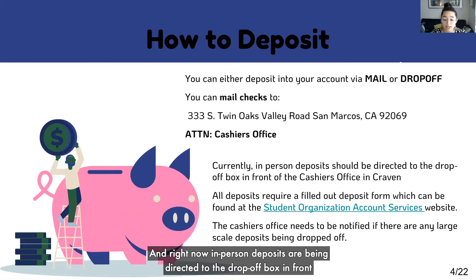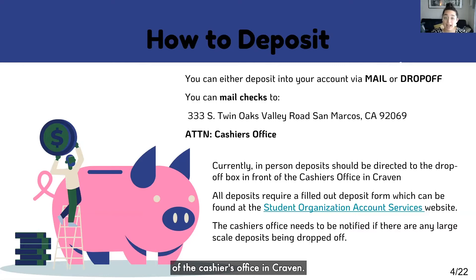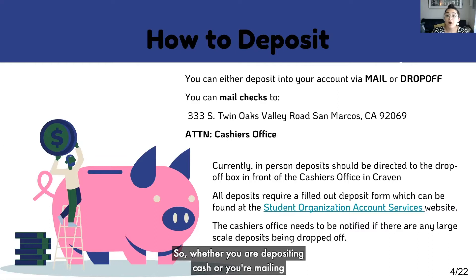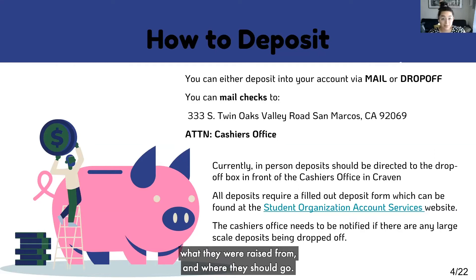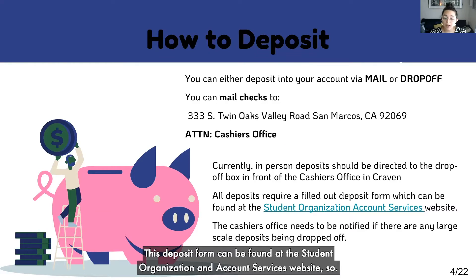Right now, in-person deposits are being directed to the drop-off box in front of the cashier's office in Craven. Whether you are depositing cash or mailing or dropping off a check, you need a deposit form. This deposit form lets us know where the funds are coming from, what they were raised from, and where they should go. This deposit form can be found at the Student Organization and Account Services website.